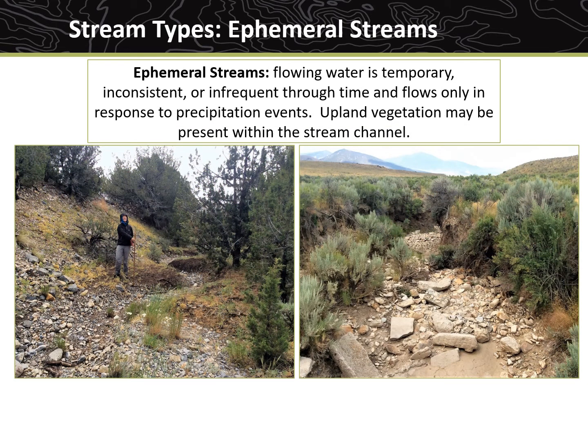Ephemeral streams have less frequent flow than intermittent streams and only flow in response to precipitation events. Ephemeral streams usually lack identifiable erosional or depositional features. In many cases, there may be upland vegetation within the stream channel.